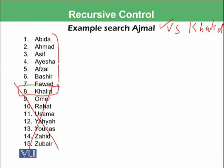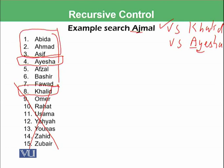These are seven entries. Again the midpoint is selected, which is Aisha. Ajmal is compared with Aisha: A matches A, but J does not match I — the ASCII value of I is more than J, so Ajmal lies somewhere above. The next sub-list selected is Abida, Ahmed, and Asif.